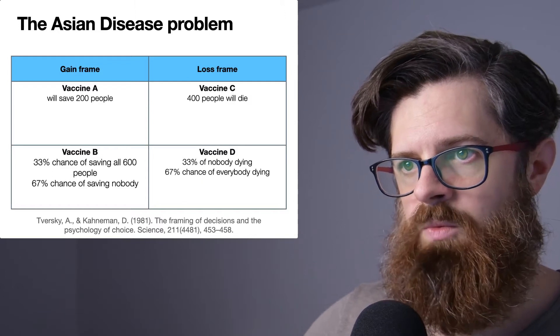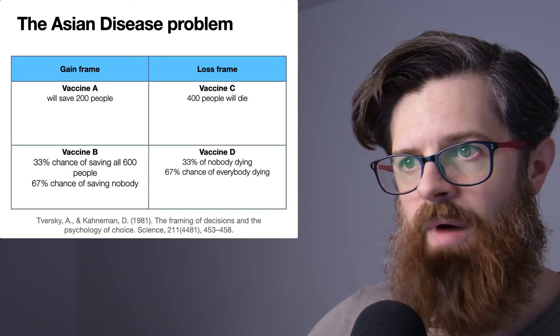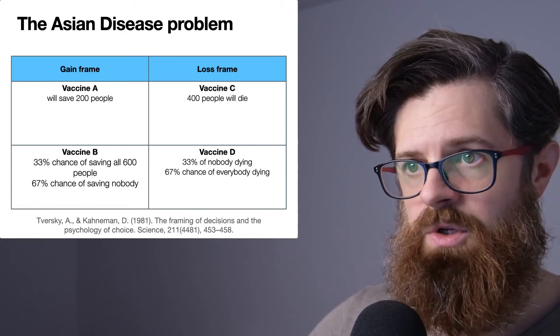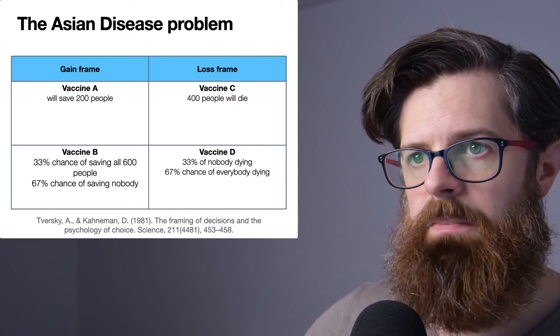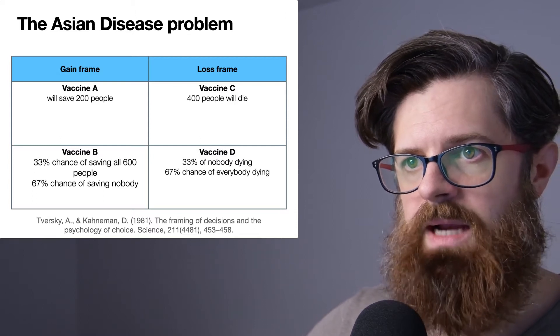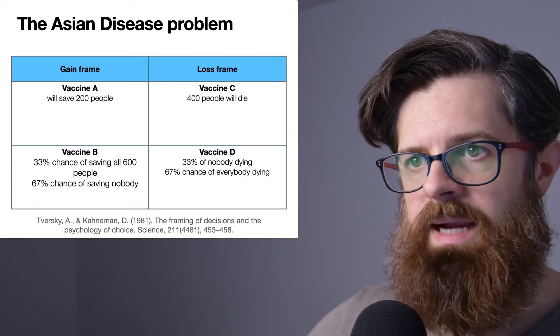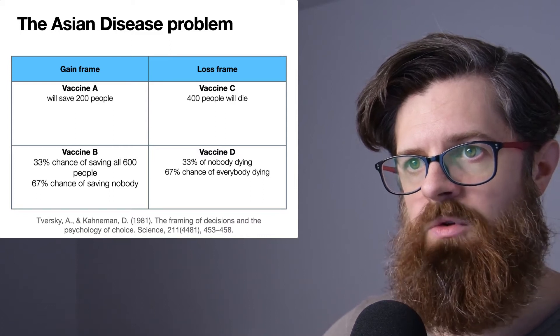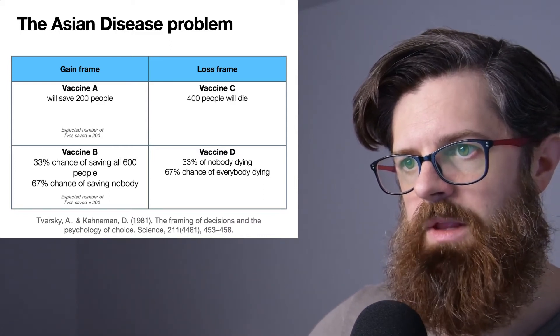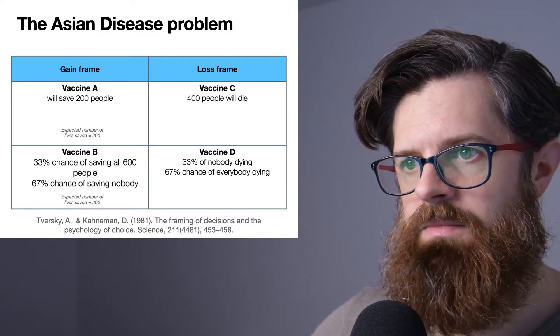If we look at the wording here, Vaccine A will save 200 people. But if we look in the loss frame—that was the second example looking at Vaccines C and D—Vaccine C says that 400 people will die. If we actually think in terms of expected number of lives saved...